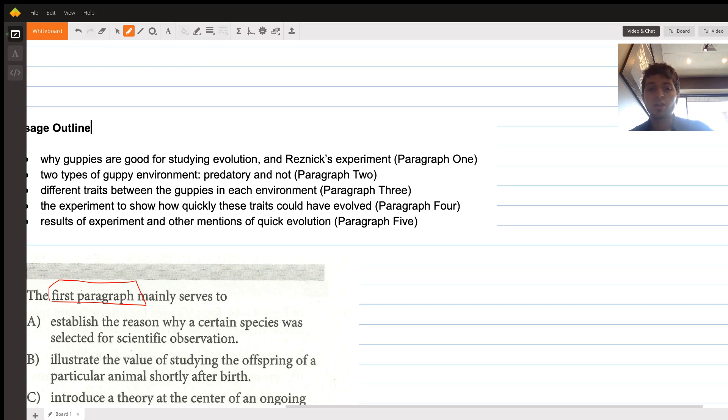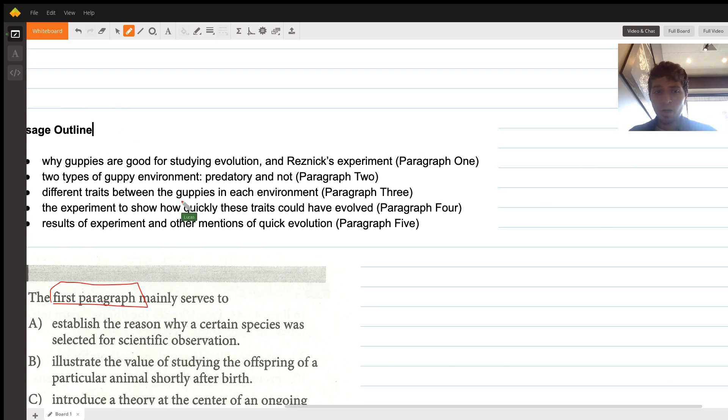Real quick, the passage starts with talking about why guppies are good for studying evolution, introduces the experiment, talks about two types of guppy environments—predatory and not—different traits between the guppies in each of the environments, and then the experiment to show how basically you can manipulate the environment and cause genetic evolution, rapid change in the genes.